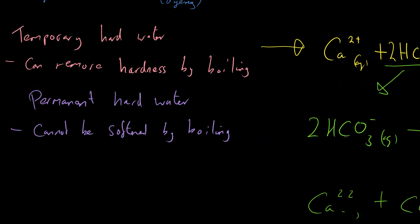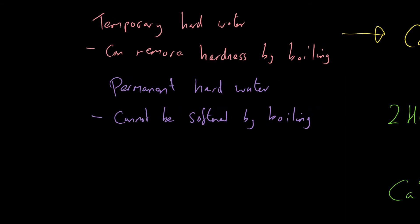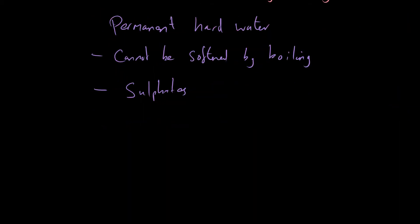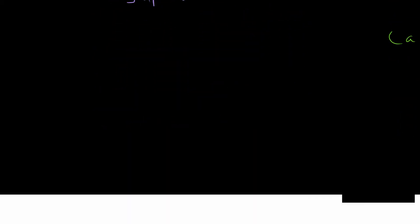The problem with permanent hard water is that it contains different things — often sulfates. Sulfate ions are different because they can't be broken down when we boil; they can't be decomposed. You would actually need a much higher temperature, and that's why they stick around. So we need to use other methods to remove the hardness from permanent hard water.